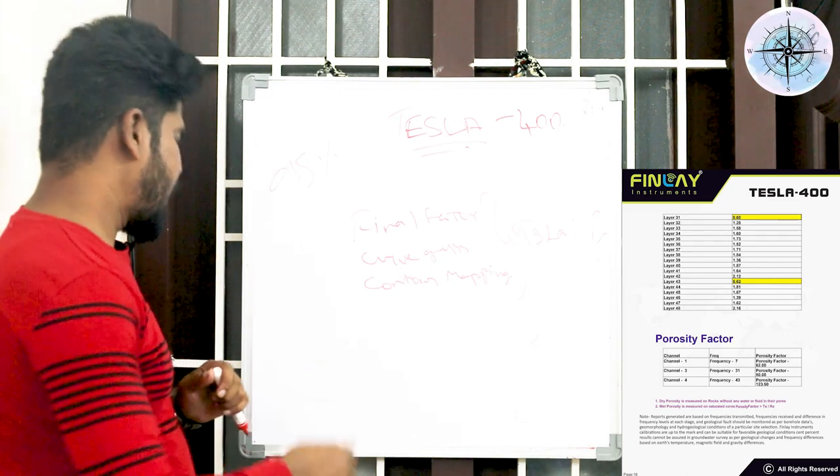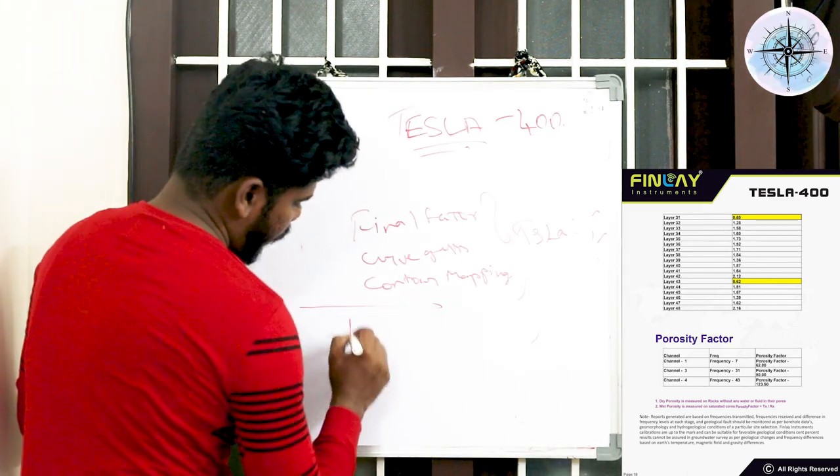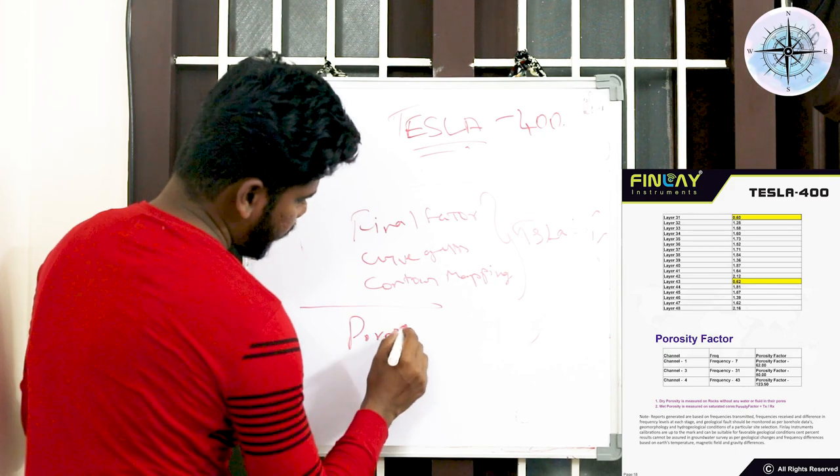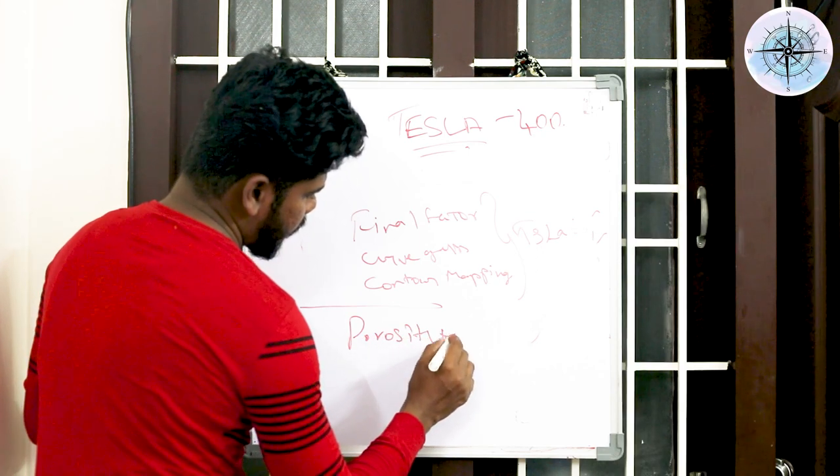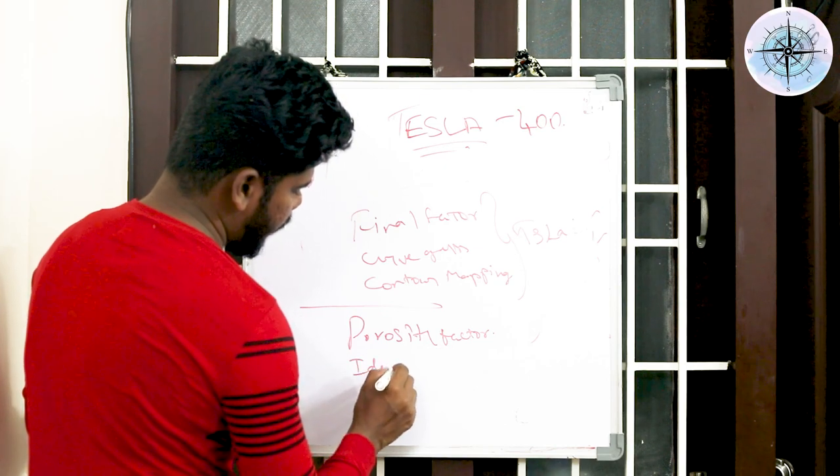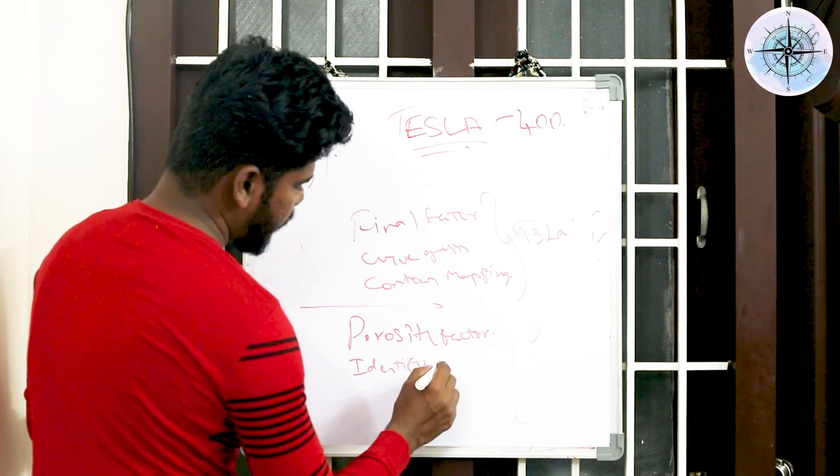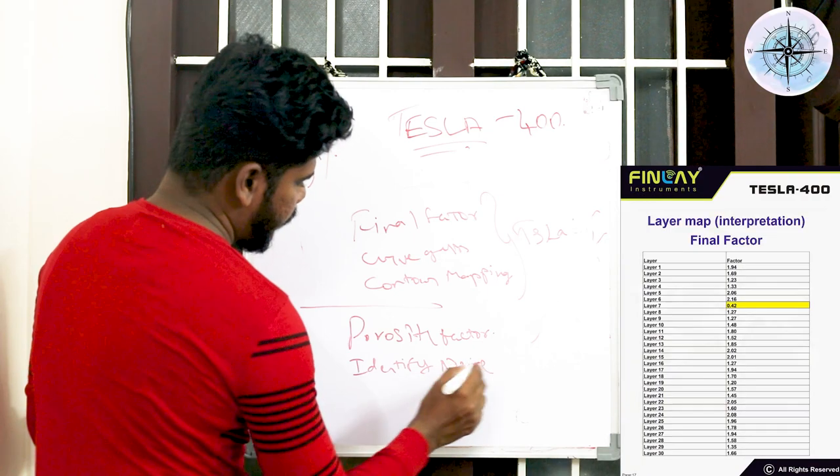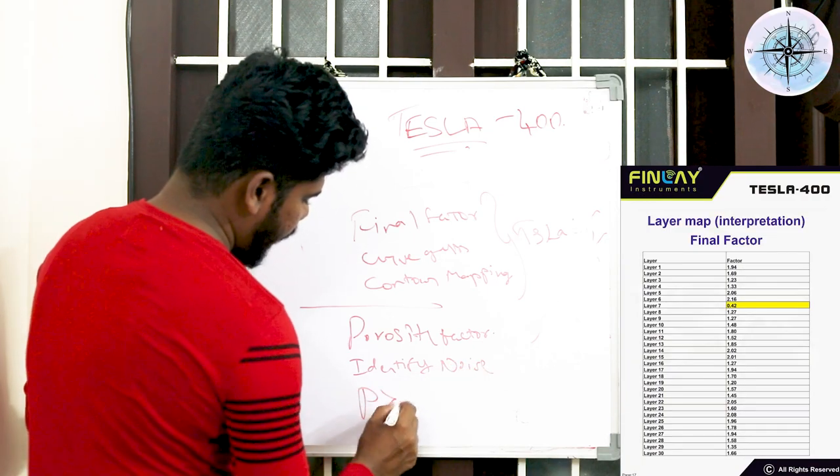That is what I have to say. The next one is the porosity factor. Why is it given? So porosity factor is given to identify the noise data. If the porosity factor is greater than 100, then it's a noise.